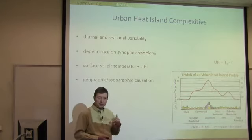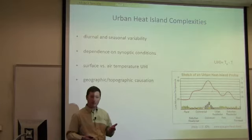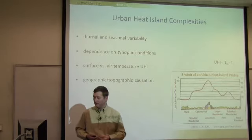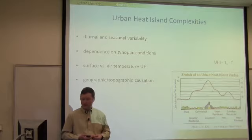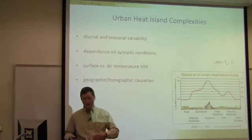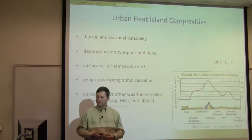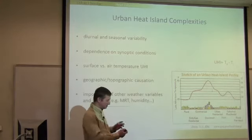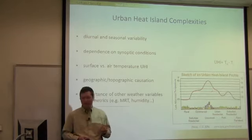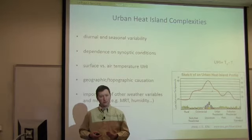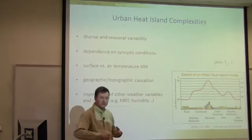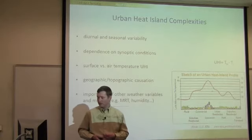Just because there's a difference in urban and rural temperatures does not necessarily mean cities are causing that difference. Other factors influence spatial variability of surface and near-surface air temperatures — specifically geographic and topographic causation, presence of nearby large bodies of water, or geographic effects of mountains. And when we focus too much on this delta T, we miss other key aspects of the urban climate system, like humidity or mean radiant temperature — the effective temperature people experience walking through urban canyons.